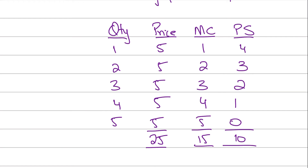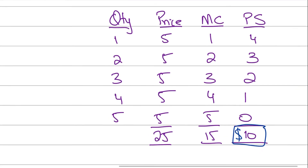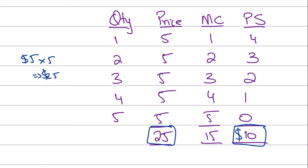If you add all the individual producer surpluses — four plus three plus two plus one plus zero — you get a total producer surplus of ten dollars for producing and selling five units. Alternatively, selling five units at five dollars each gives total revenue of twenty-five dollars. Summing the individual marginal costs gives you the total variable cost, since marginal cost is the variable cost incurred on each additional unit.